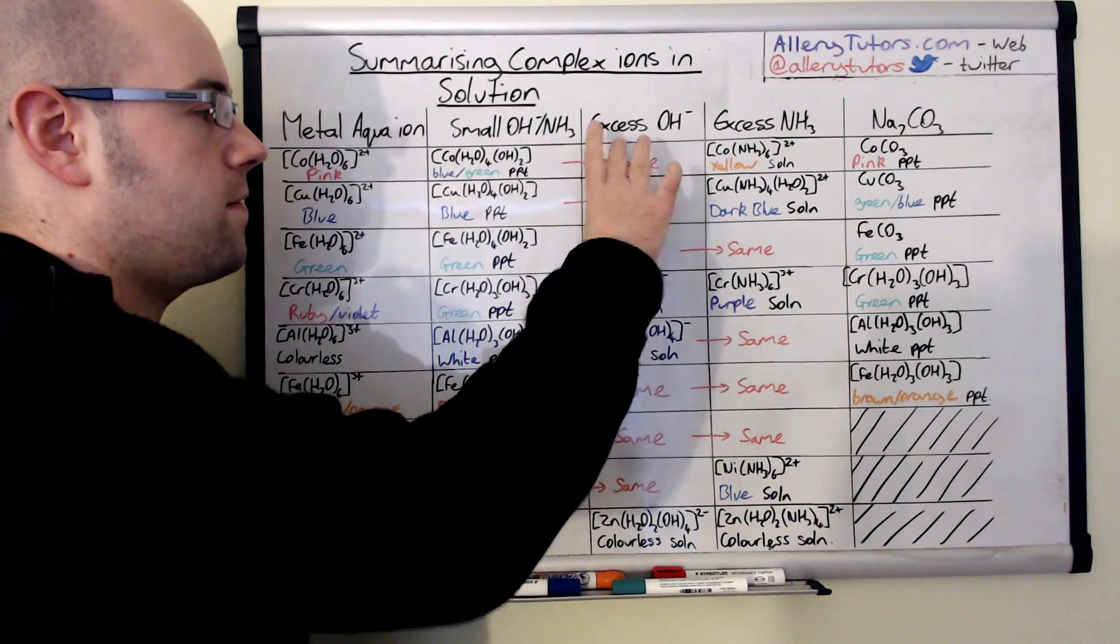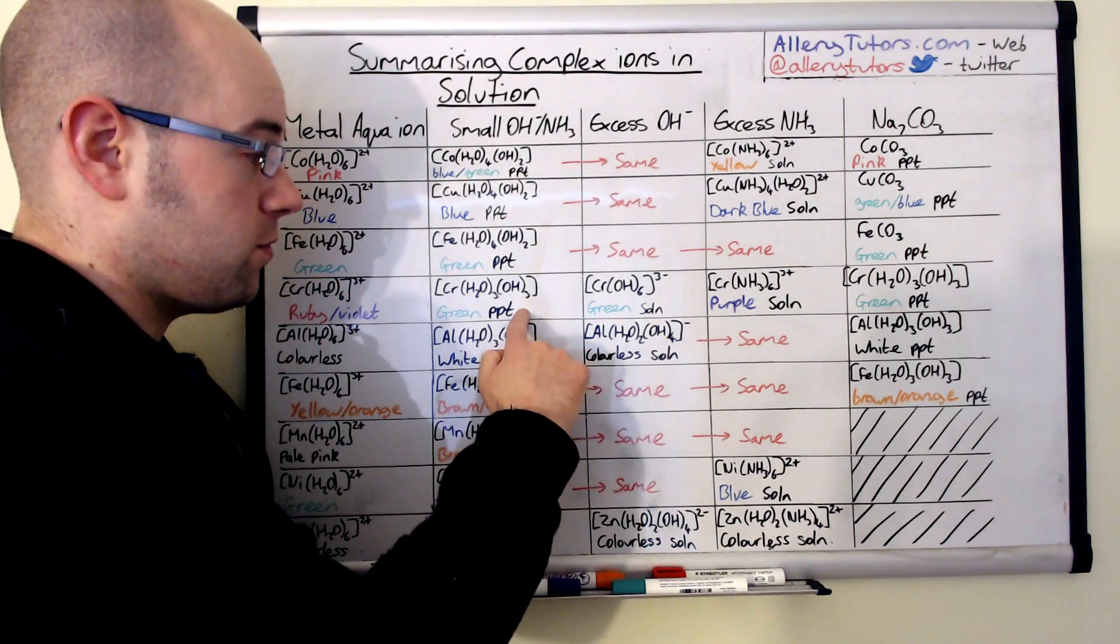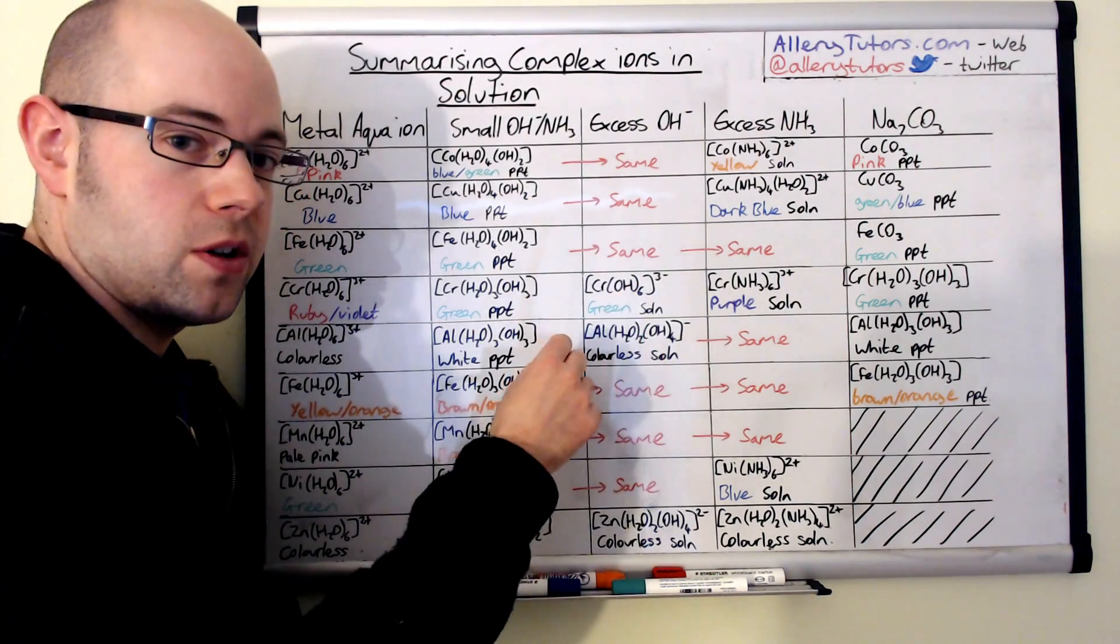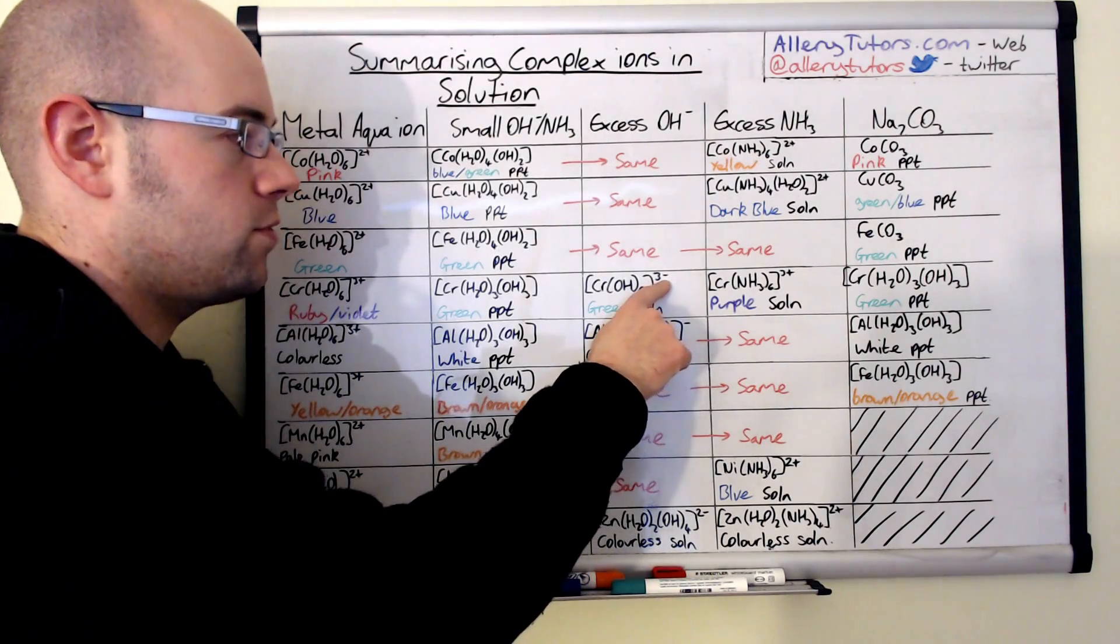The chromium 3+ does and forms a green precipitate, but then when we add excess it redissolves the precipitate and it goes back into a solution again because we've reformed a charged complex.